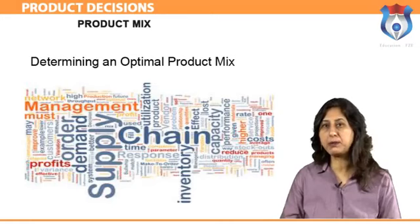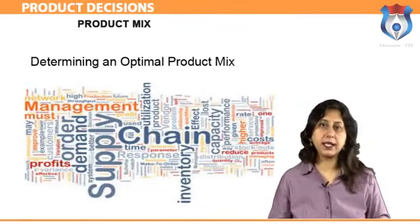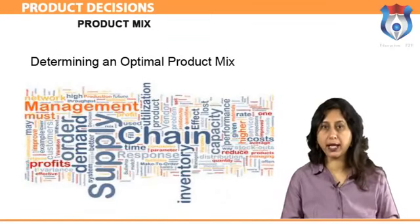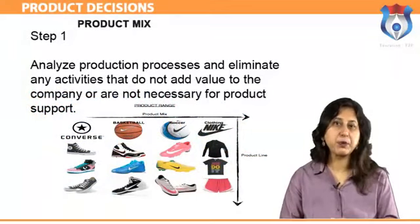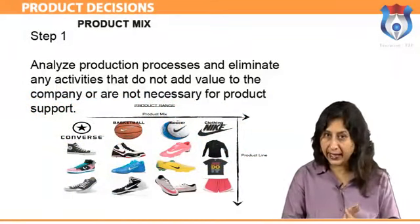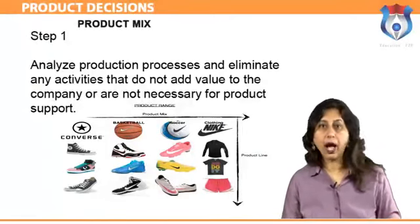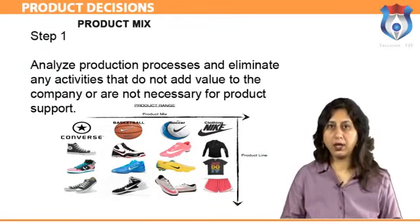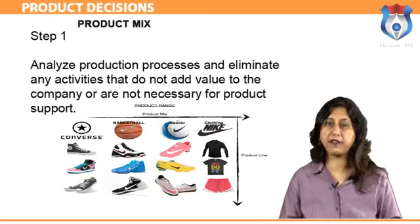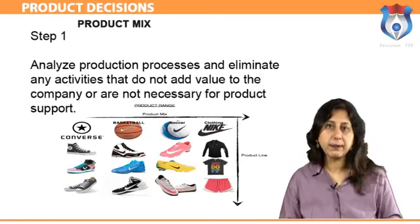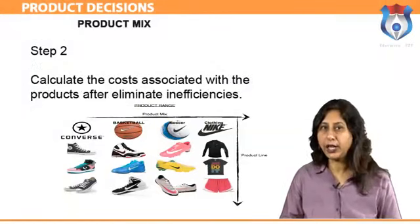A company's product mix determines the proportionate amount of each product it offers to its customers. Step 1: analyze production processes and eliminate any activities that do not add value to the company or are not necessary for product support. Before you can determine an optimal product mix, the process for manufacturing your products must be as efficient as possible.